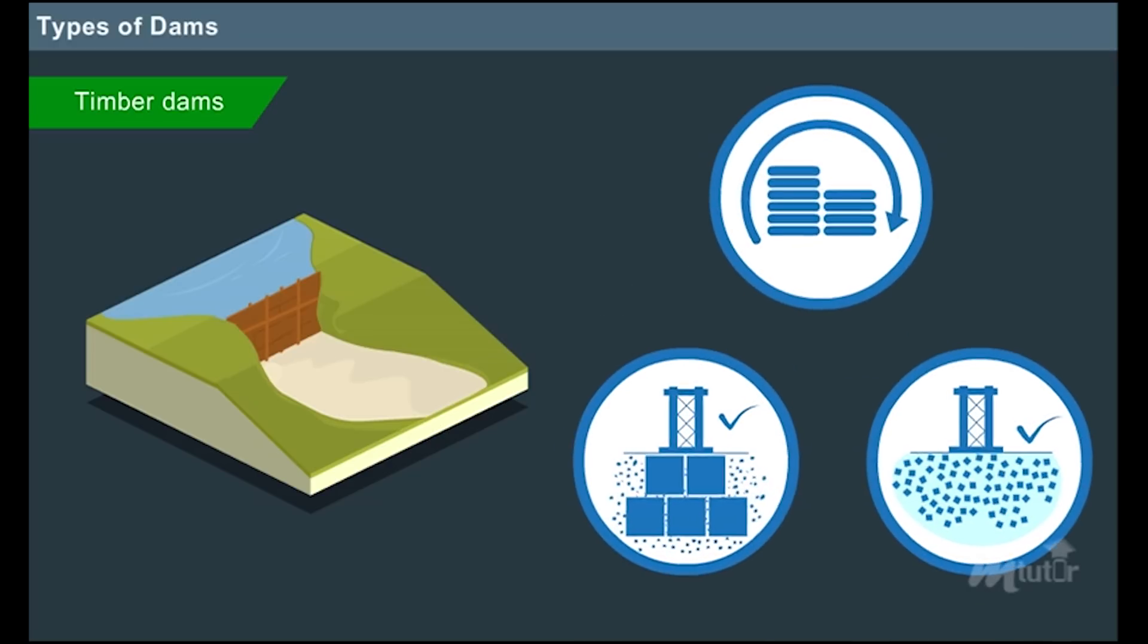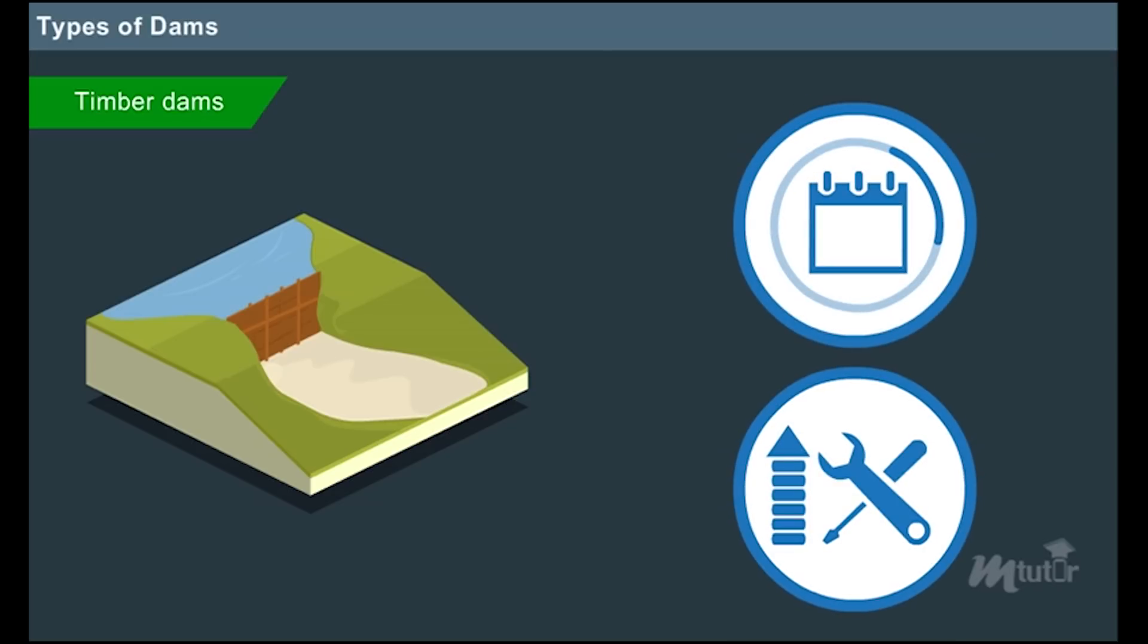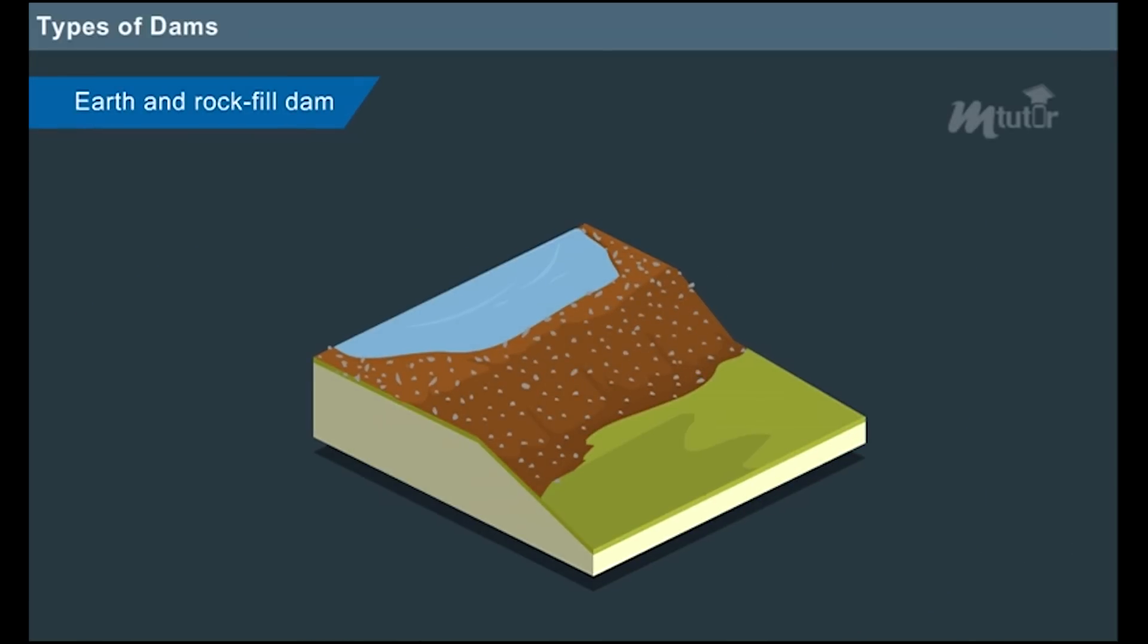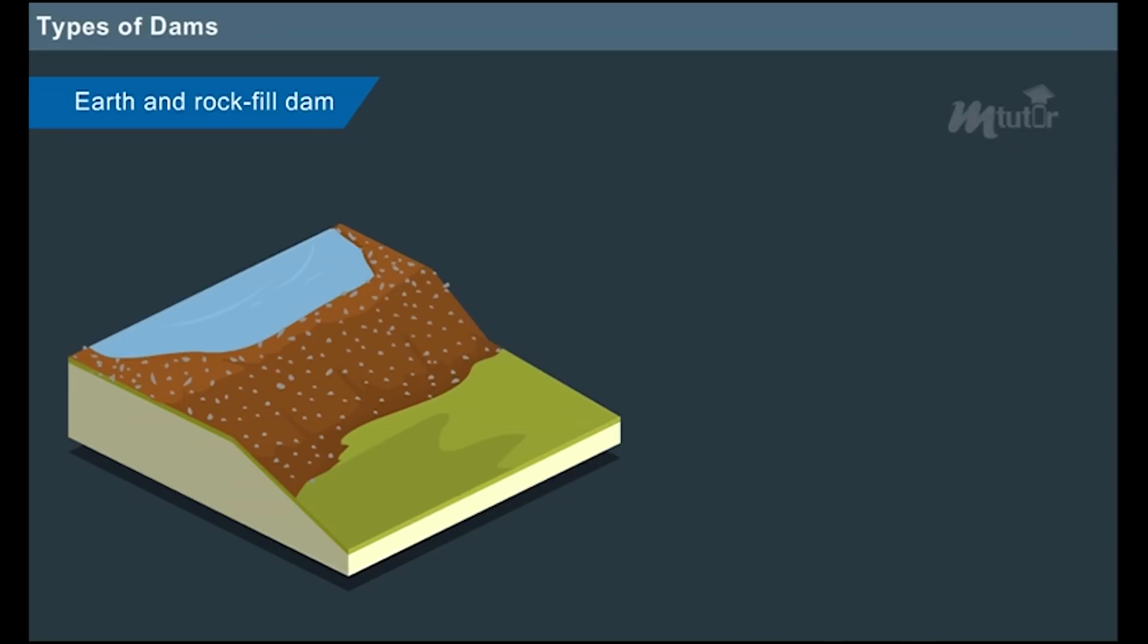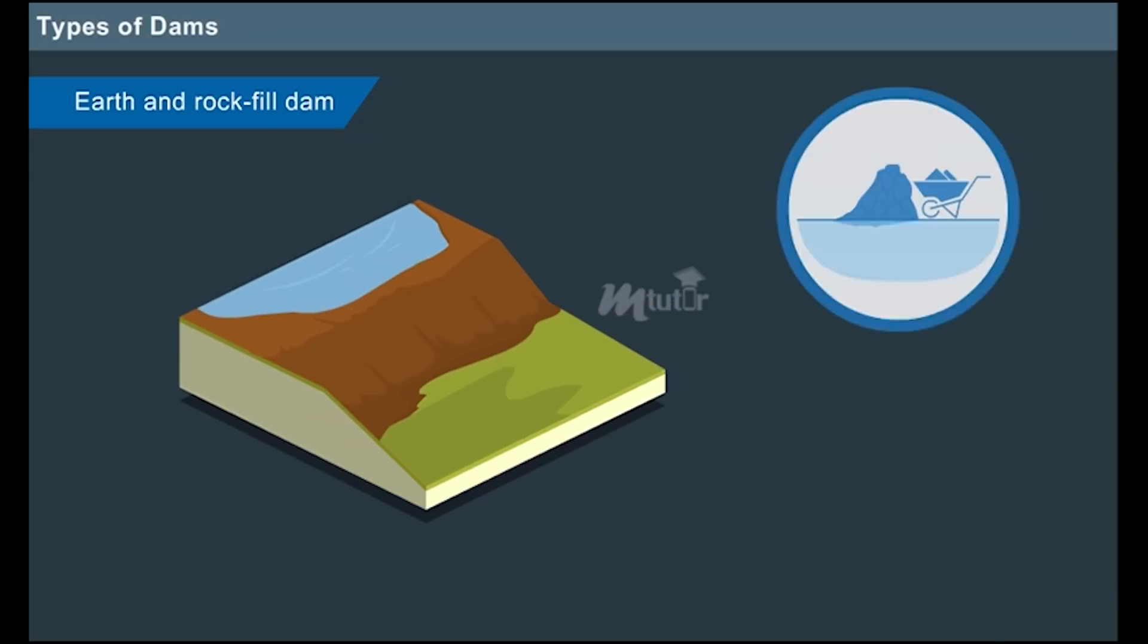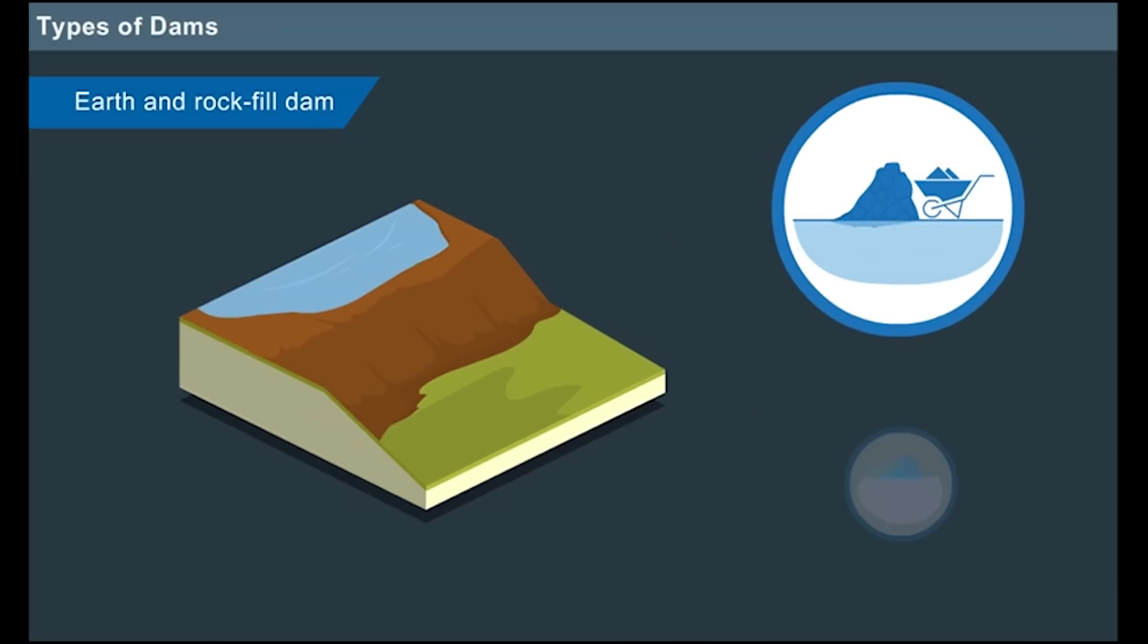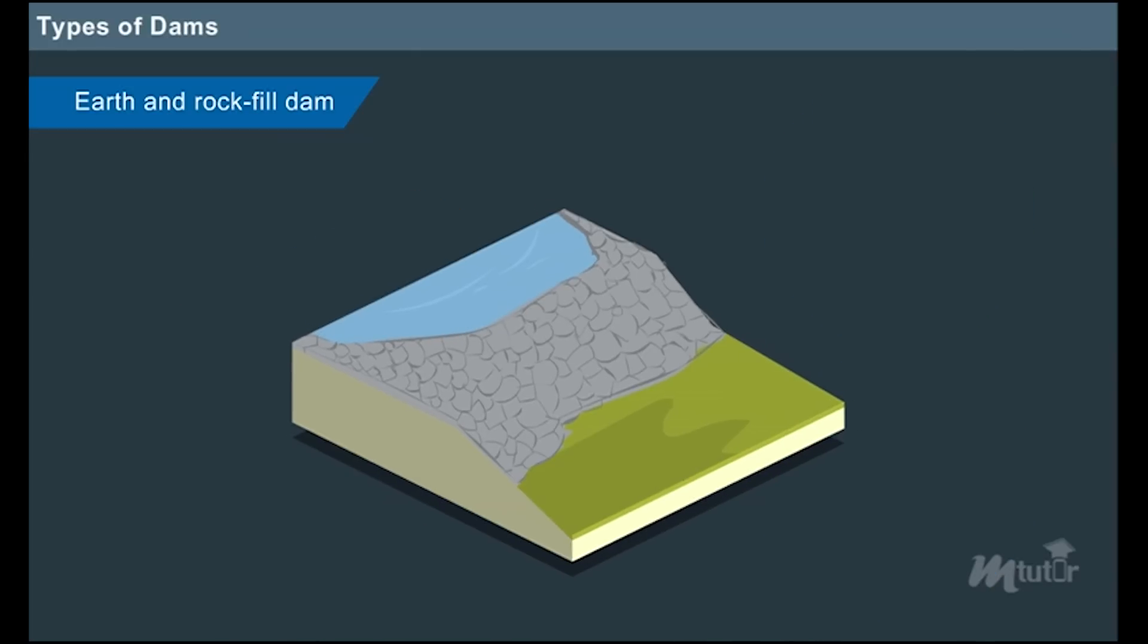Earth and rock-filled dam: These dams are constructed with locally available materials like soils and gravels. When a dam is filled with soil, it is named as earth-filled dam. The earth-filled dams are constructed on sites with weaker underlying soils or rocks that cannot support any other masonry structures.